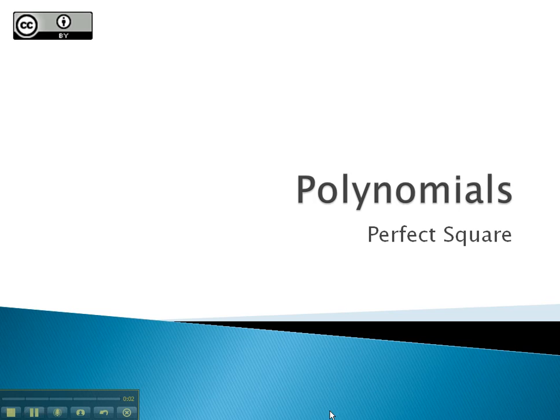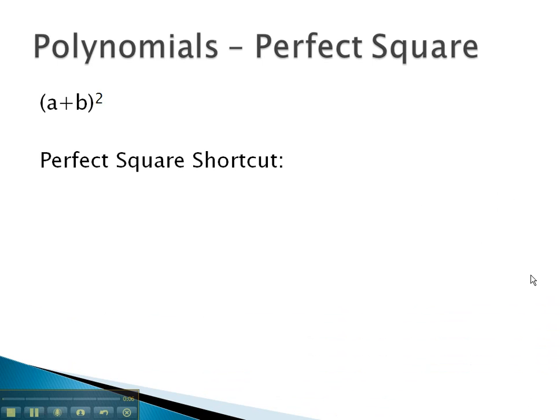In this video, we will look at multiplying a special polynomial called a perfect square. The idea with a perfect square is we'll have some binomial that is squared. Squared simply means that it is multiplied by itself, so this is really a plus b times a plus b.